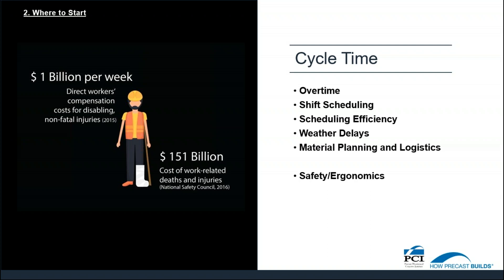Safety is also an important element to consider in cycle time. Any injuries or safety violations can cause delay in the process, increasing the cycle time. In the 2018 Workplace Safety Index, Liberty Mutual estimated that employers paid more than $1 billion per week for direct workers' compensation costs for disabling non-fatal workplace injuries in 2015. This is coming from our profits, our hard-earned dollars, and as an industry we're losing dollars that can be prevented to some degree.